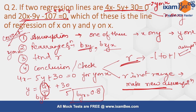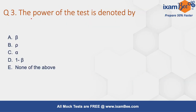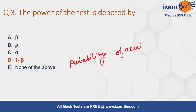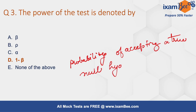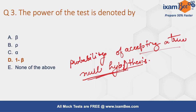Question number three: the power of the test is denoted by what? The power of a test is the probability of accepting a true null hypothesis. So if you are accepting a true null hypothesis, it is known as the power of the test.